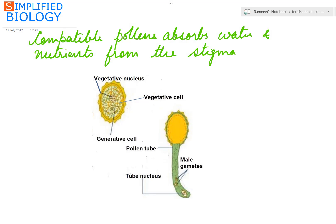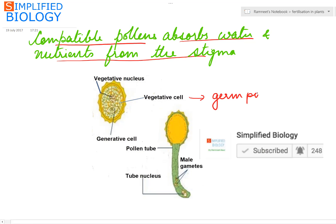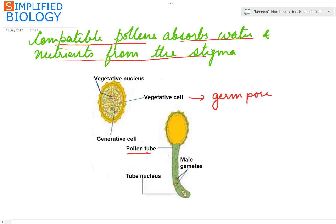The compatible pollens lying on the stigma absorb water and nutrients from the stigma. The vegetative cell of the pollen comes out of the germ pore, forming the pollen tube, and its nucleus is present at the tip of the pollen tube as the tube nucleus. In the meantime, the generative cell divides to form two male gametes, which lie behind the tube nucleus in the pollen tube.